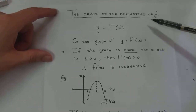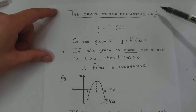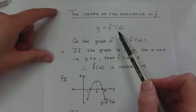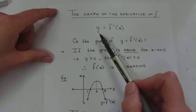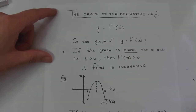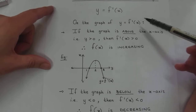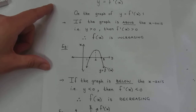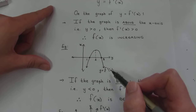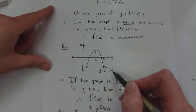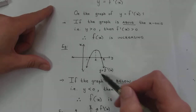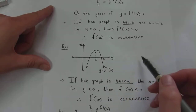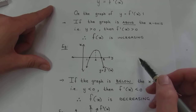Hello Grade Twelves. In this video we're going to be looking at the graph of the derivative of a function. We're going to be looking at a graph defined not as y equals f(x), which we normally have, but as y equals the first derivative of f(x). We first have to look at some concepts. Please don't let the visuals fool you, because we're going to make certain deductions about f(x) based on this graph, but the deductions will not look the same way they normally do.